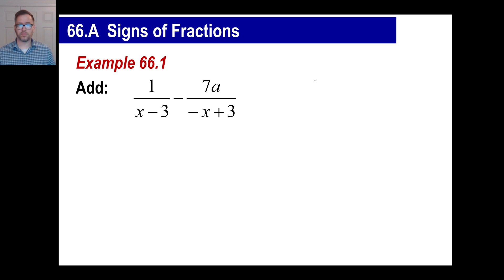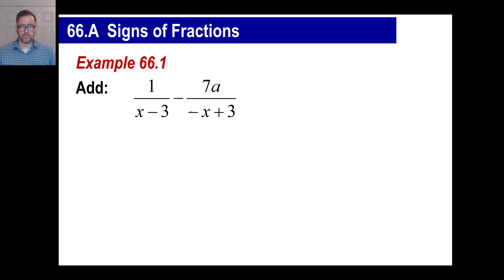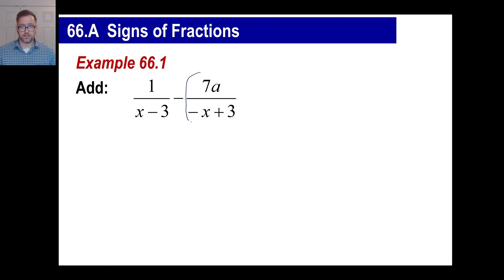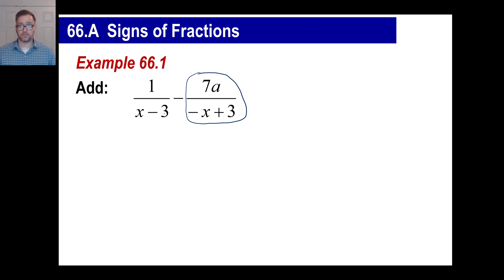We're going to use that to solve problems. If you look at this denominator, it looks just like that denominator except all the signs are different — this is a negative x plus three. Since this is a fraction by itself, we're not going to change the value if we change every single term. By doing so, we're going to make this denominator match that denominator so we can add them together.